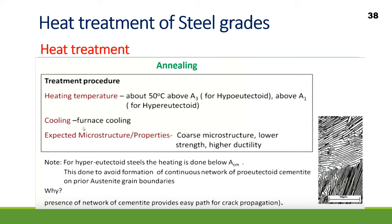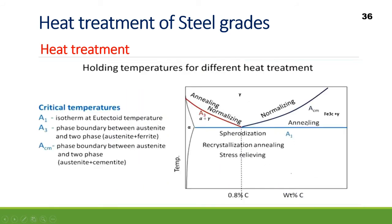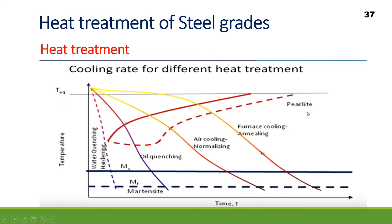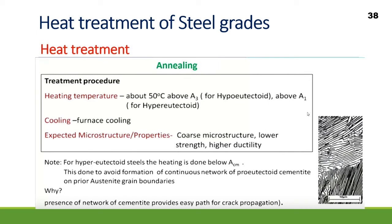For full annealing, cooling is done by furnace cooling. The expected microstructure and properties are a coarse microstructure, lower strength, and high ductility. An important note for hypereutectoid steel: heating is done 50°C above A1 but must not cross the Acm temperature, so the heating zone is between A1 and Acm.